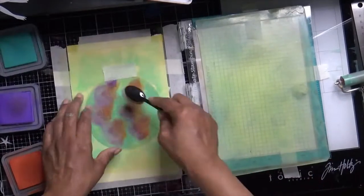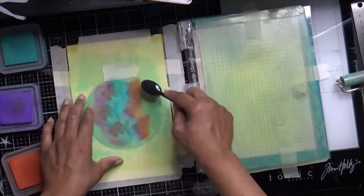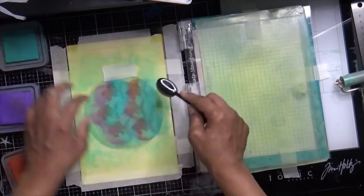The stencil material that I'm using, it's hard to see on camera, but it is kind of revealing itself as I'm adding the ink and I'm adding peacock feathers to the fins.